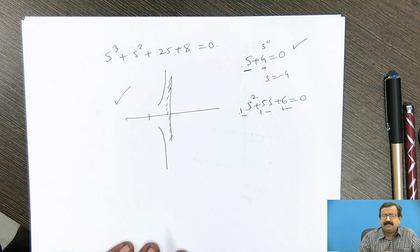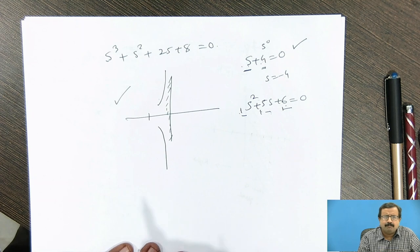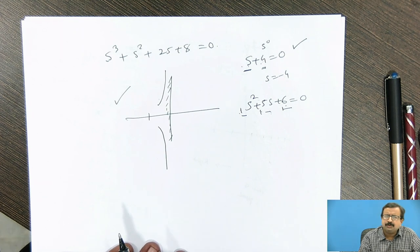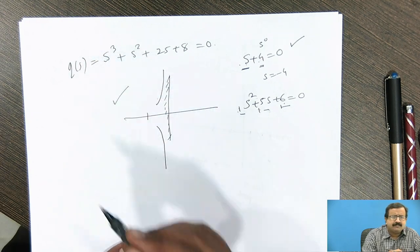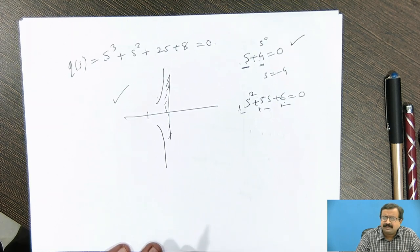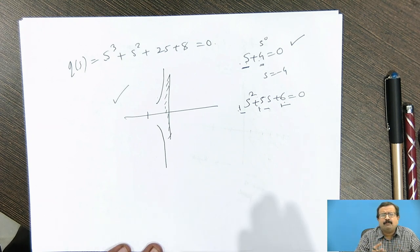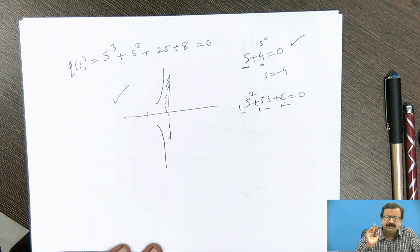Today we take another case involving a cubic equation: s³ plus s² plus 2s plus 8 equals 0. This is the characteristic equation Q(s), which is the denominator of the closed-loop transfer function with negative feedback, equal to 1 plus GH. Given an open-loop transfer function, you convert it using 1 plus GH, find the equation, and form a polynomial — always of nth degree — and today we take it up to a cubic.